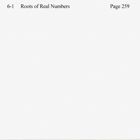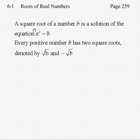In beginning Chapter 6, Section 1, Roots of Real Numbers, we'll begin by talking about square roots. The square root of a number b is a solution to the equation x squared equals b. Every positive number b has two square roots, denoted by these symbols, which we'll pronounce as the square root of b, and the opposite of the square root of b.